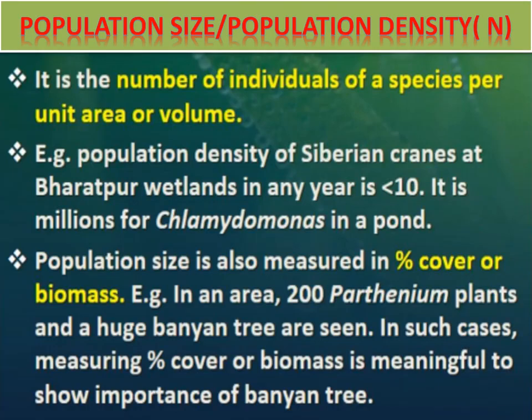The next attribute of population is population size or population density, represented by N. It is the number of individuals of a species per unit area or volume. For example, the population density of Siberian cranes at Bharatpur wetlands in any year is less than 10, while it is millions for Chlamydomonas in a pond.